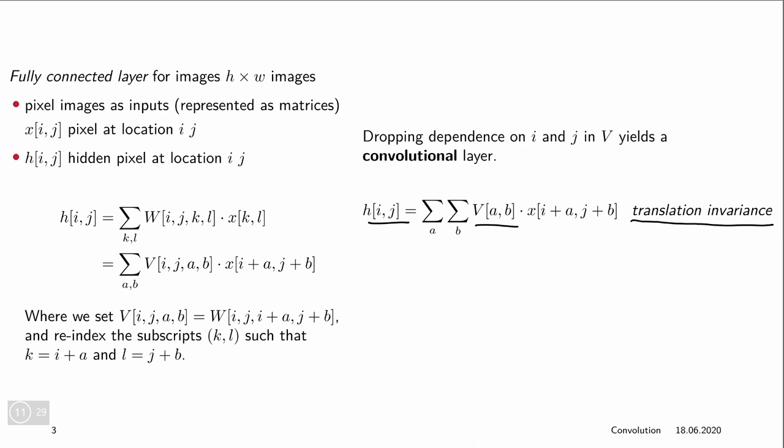Remember, i,j corresponds to the output in h but it also corresponds to the center pixel in x and we're using a and b as sort of offsets in order to go left and right and up and down in that image.